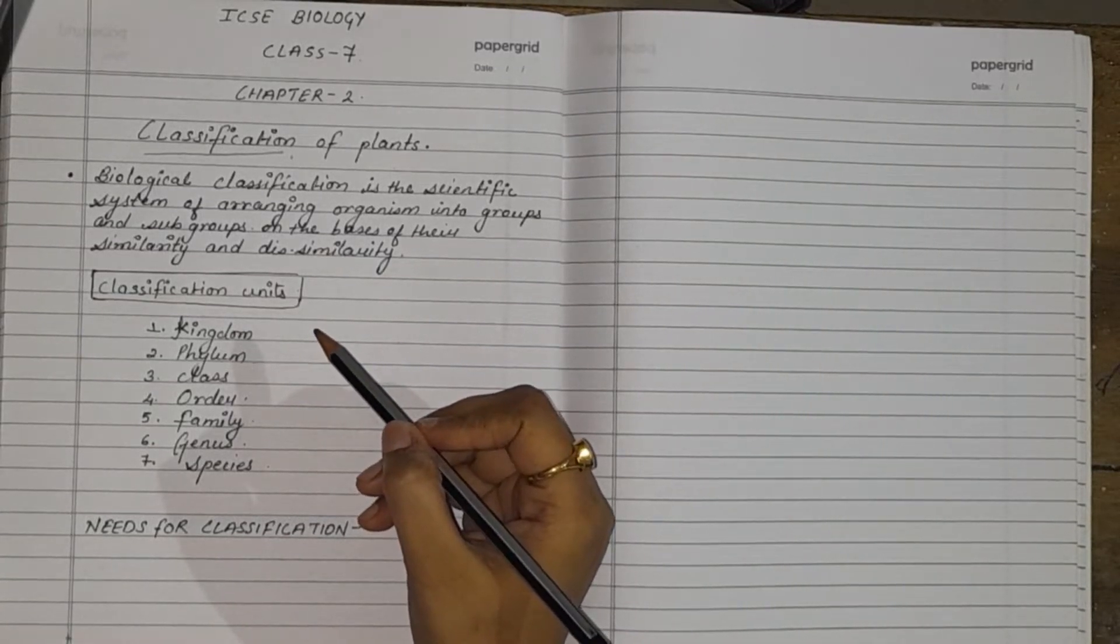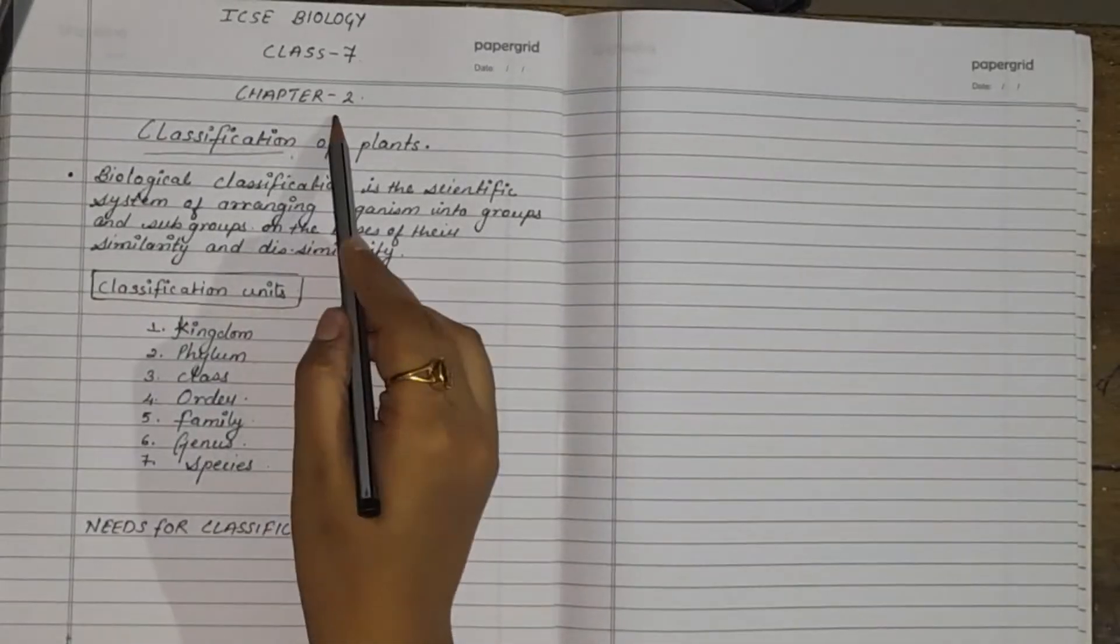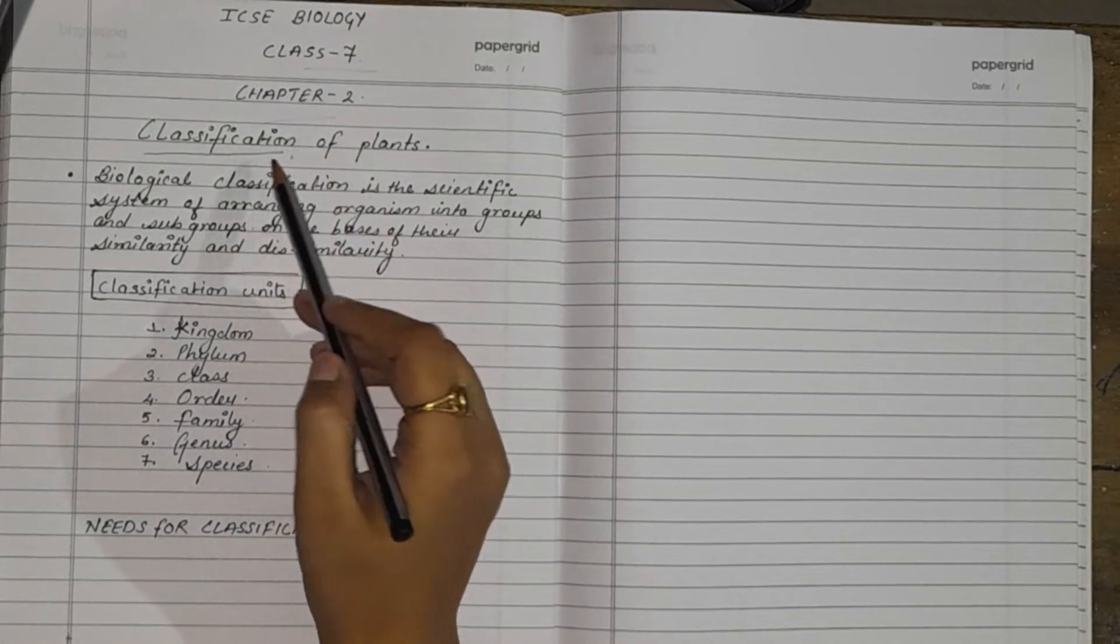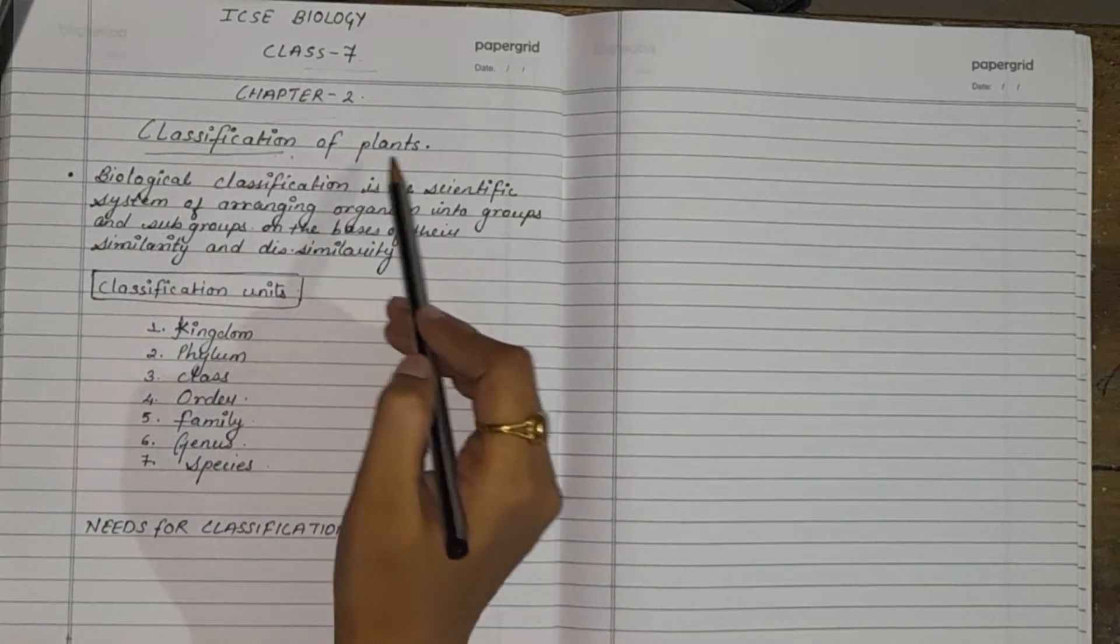Hi students, today we are going to study chapter number 2 of class 7. The name of the chapter is classification of plants.